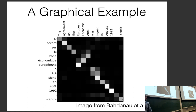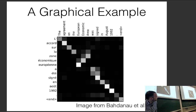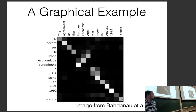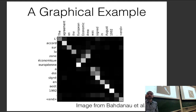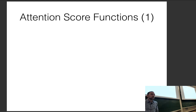Here's a graphical example: black indicates lower attention values, white indicates higher. French is the output. Each row normalizes to one, and lighter colors have higher attention weight. You can see that words roughly align, and interestingly, 'European economic area' is reversed in English versus French — but the model picks up this reversal just through end-to-end training.